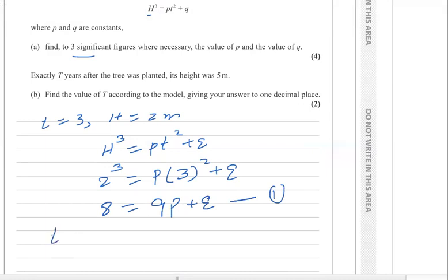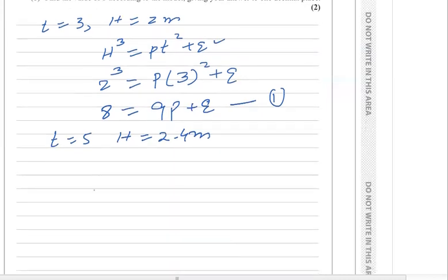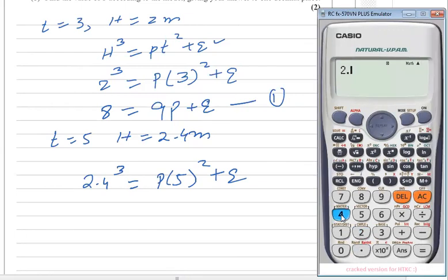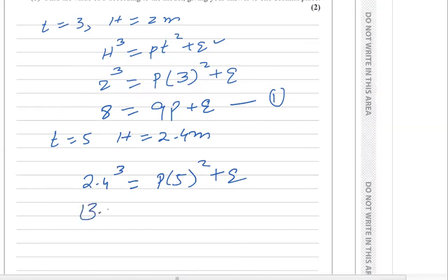Now using condition two: when t = 5 and h = 2.4 meters. Substituting into the model: 2.4³ = p × 5² + q. The cube of 2.4 is 13.824, so we get 13.824 = 25p + q. This is equation number two.